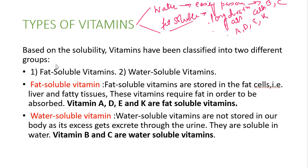So, how do we divide vitamins on the basis of solubility? There are two types: fat-soluble and water-soluble. Fat-soluble vitamins are stored in our fat cells, liver, and fatty tissues. These vitamins require fat in order to be absorbed.